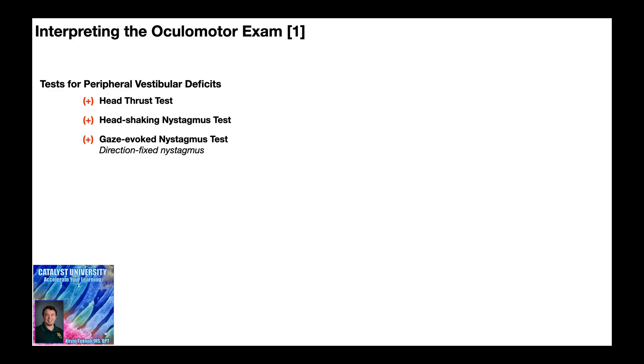Now remember, with the oculomotor exam, there are some tests that are more suggestive of peripheral vestibular deficits or hypofunctions. That's what we're going to look at first. Those test results would be a positive head thrust test, a positive head shaking nystagmus test, and a positive gaze-evoked nystagmus test with direction-fixed nystagmus.